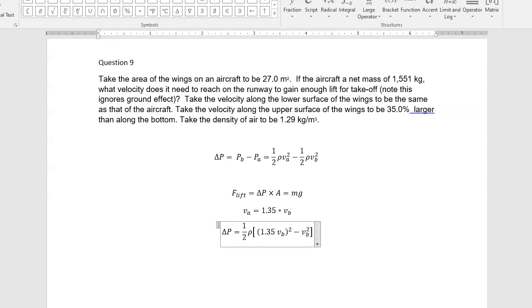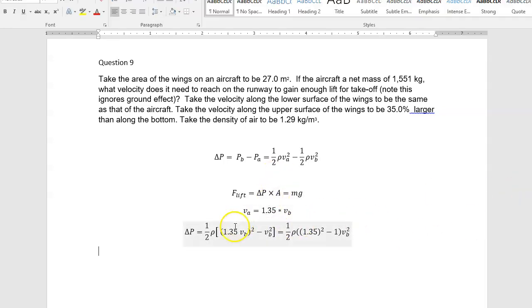And so, I'm going to do some algebra: one-half rho, and we've got in parentheses, 1.35 squared minus 1 times VB squared. So all I did was I factored out VB squared, because you get 1.35 squared times VB squared minus VB squared. I factored out VB squared.